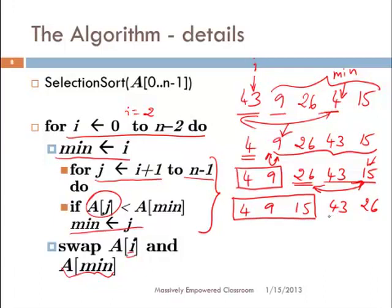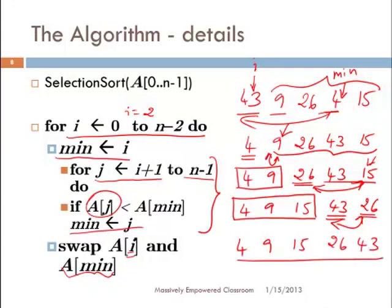So we start at i equals 3, at 43. We find the minimum among the remaining elements — there is only one element that is smaller. We exchange 43 and 26. The result is 4, 9, 15, 26, 43, and the entire array is sorted. This is how selection sort works.